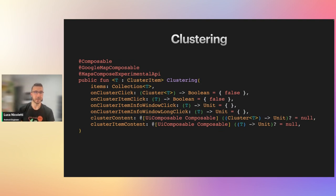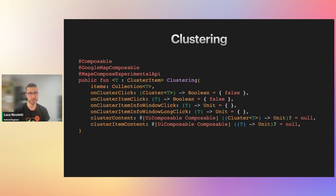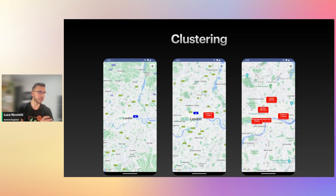This is the declaration of the Clustering composable function. The only required thing is items — a collection of ClusterItem. But you can customize what happens when you click on a cluster, a marker, its info window, or long-click on it. You can also specify clusterContent and clusterItemContent — what is shown on the map at the position of a cluster or a marker. By default, providing a list of five elements, the more you zoom in or out, the clusters are created by grouping markers together.